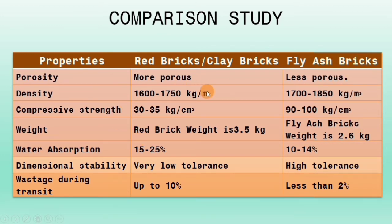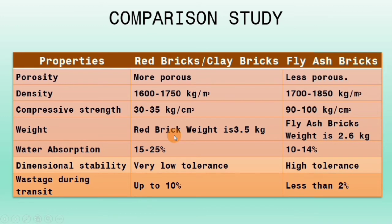Density: red bricks or clay bricks have a density of 1600 to 1750 kg per cubic meter, while fly ash bricks have a density of 1700 to 1850 kg per cubic meter. Compressive strength: red bricks have a compressive strength of 30 to 35 kg per cm², while fly ash bricks have 90 to 100 kg per cm². Weight: red bricks weigh 3.5 kg per unit, while fly ash bricks weigh 2.6 kg per unit. Water absorption: red bricks have 15 to 25%, while fly ash bricks have 10 to 14%.